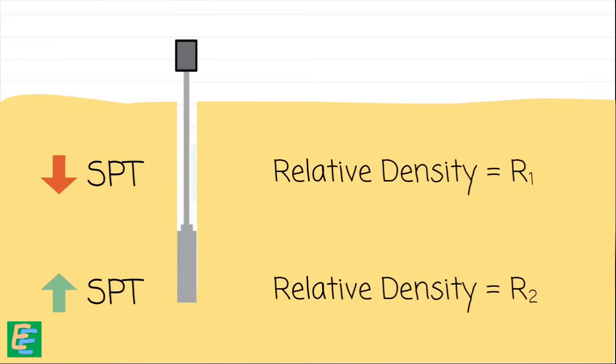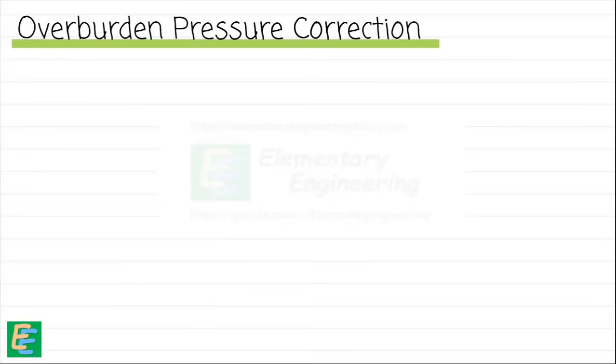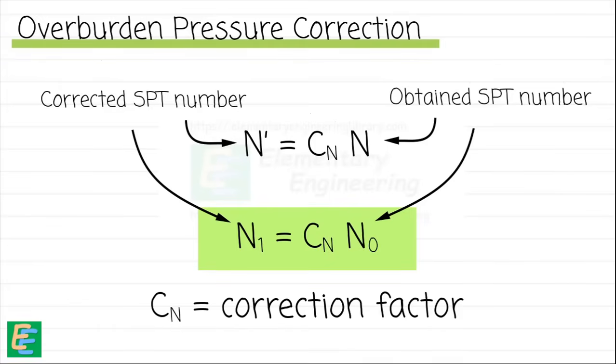This may result in a faulty conclusion of the relative density of the same soil. To correct this, we apply what is called overburden pressure correction. The corrected value of SPT number is given as N' = CN × N, where N is the SPT number obtained from the test and N' or N dash is the corrected value. This corrected SPT number is also written as N1 = CN × N0, where N0 is the N value obtained from the test, N1 is the corrected value, and CN is the correction factor for overburden pressure.